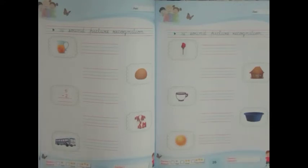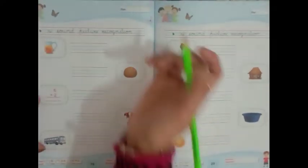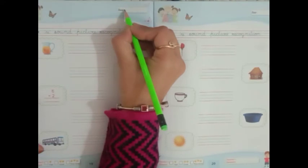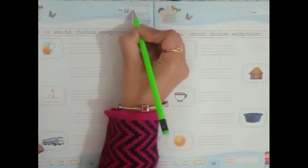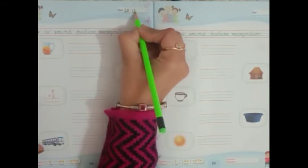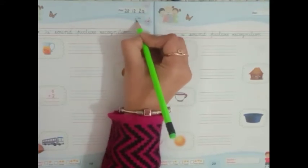You saw picture names. So firstly write the date. It's 28, 12, 20. And then we will write classwork.